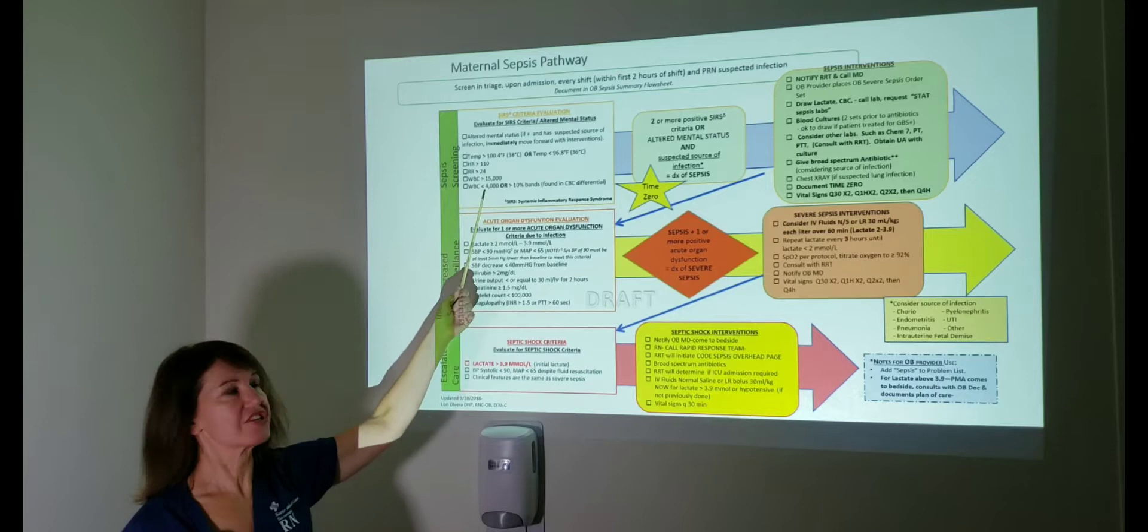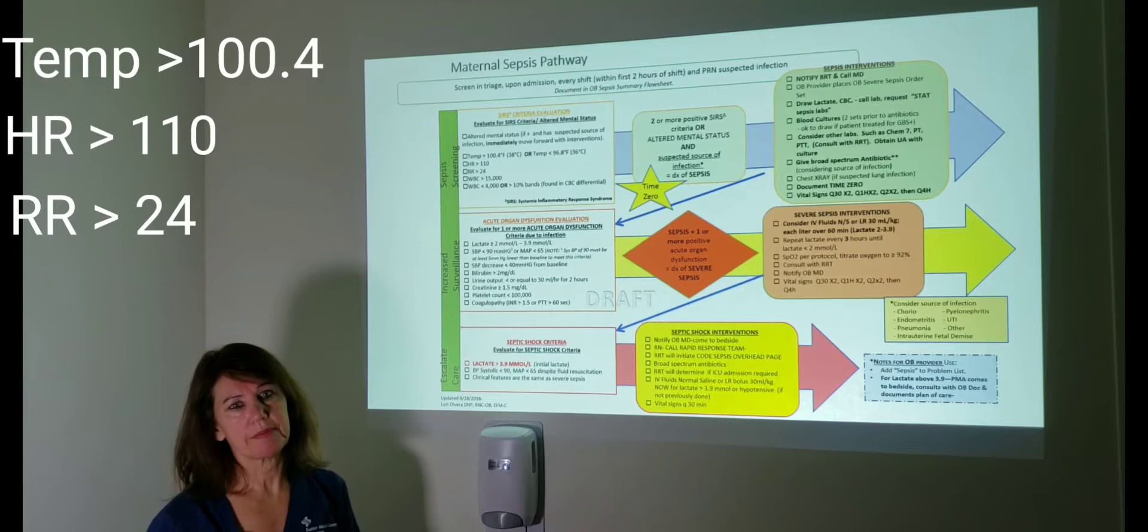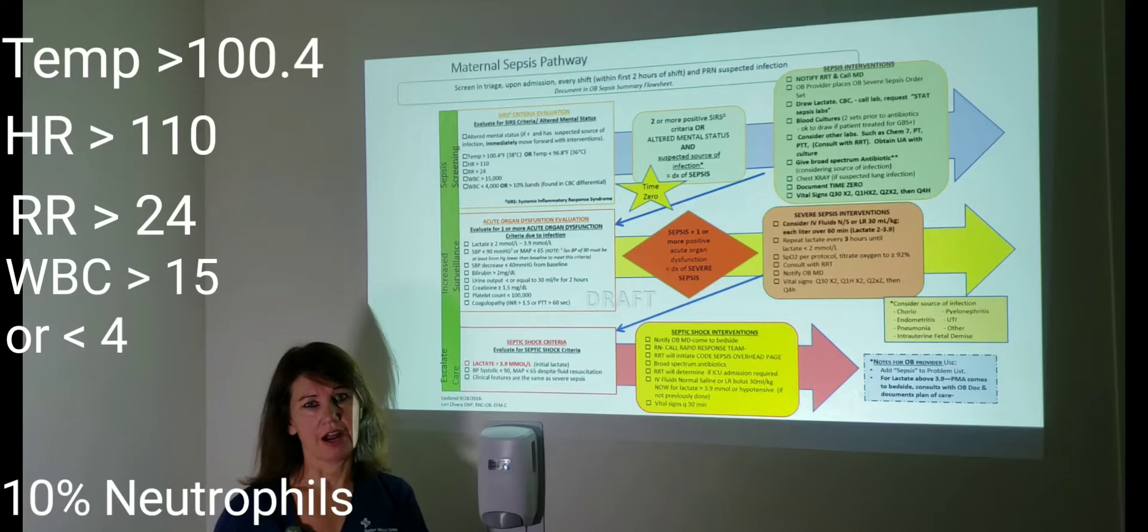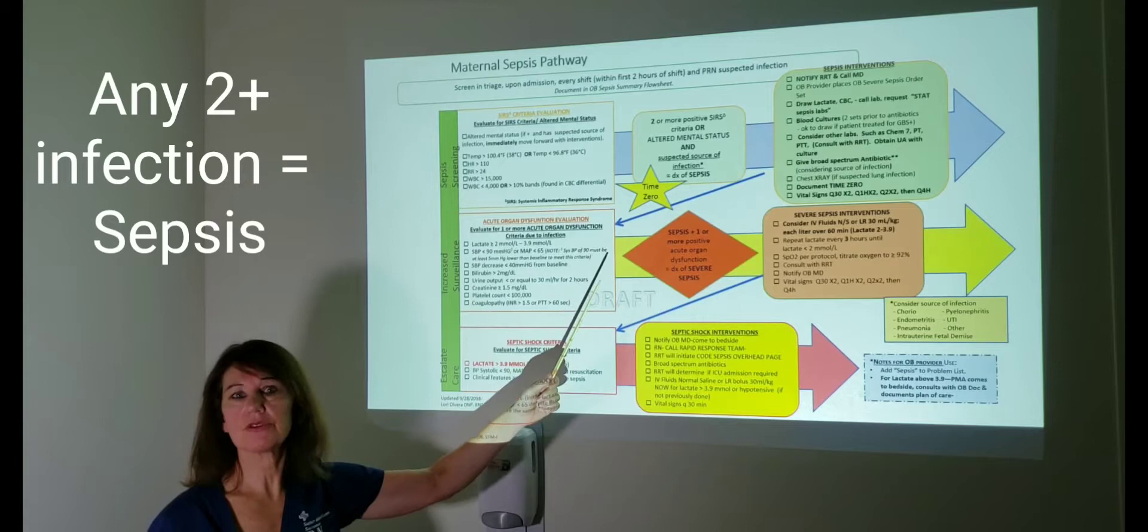We're screening the patient for the criteria listed here. It's a temp above 100.4, heart rate above 110, respiratory rate above 24, WBC greater than 15,000 or less than 4,000, or you have 10% immature neutrophils or bands. If you get any two of those and you suspect an infection—and that's the key, suspecting infection plus two SIRS criteria—they screen in positive for sepsis.